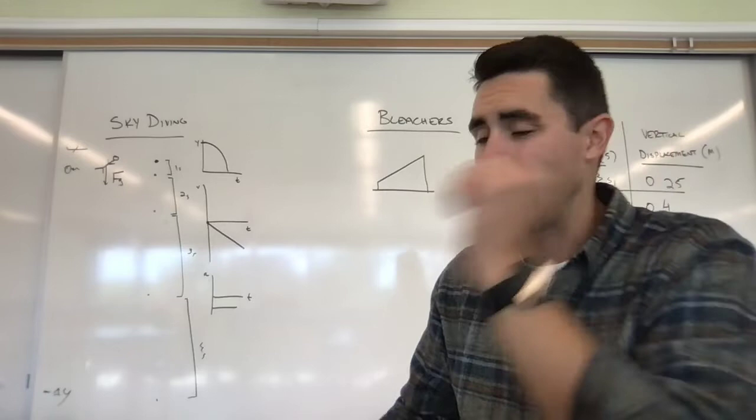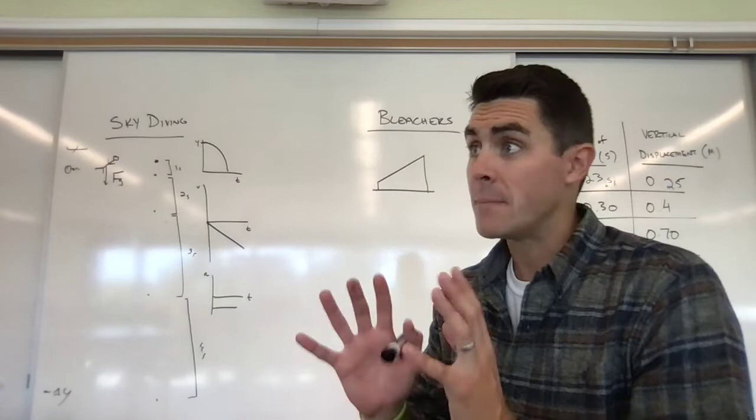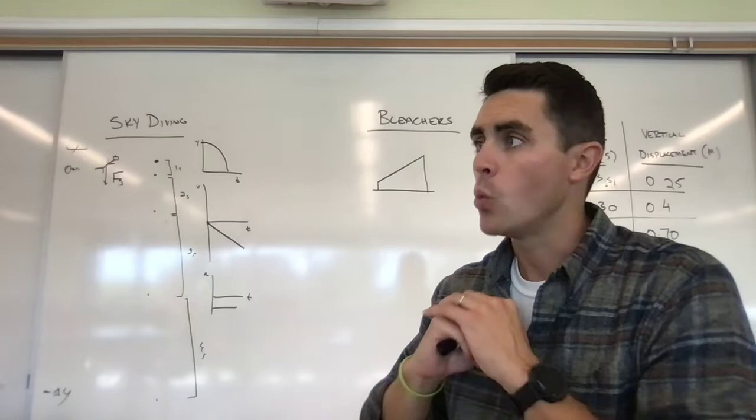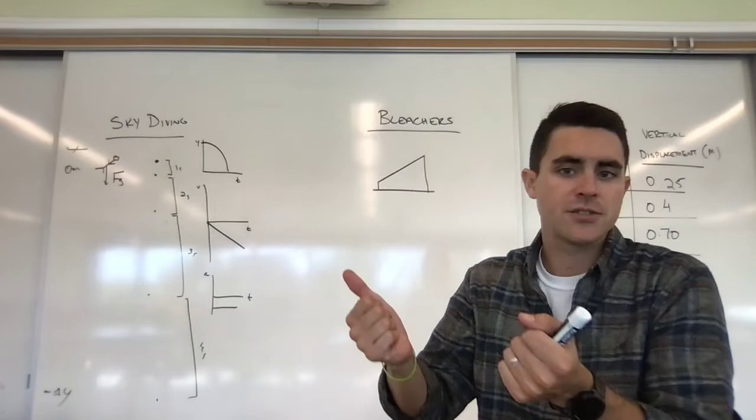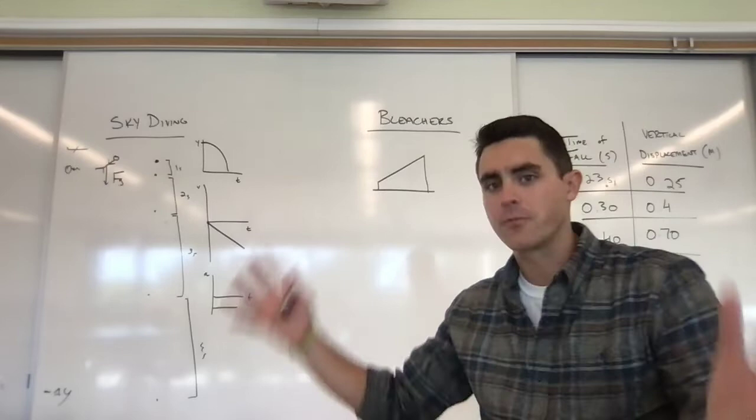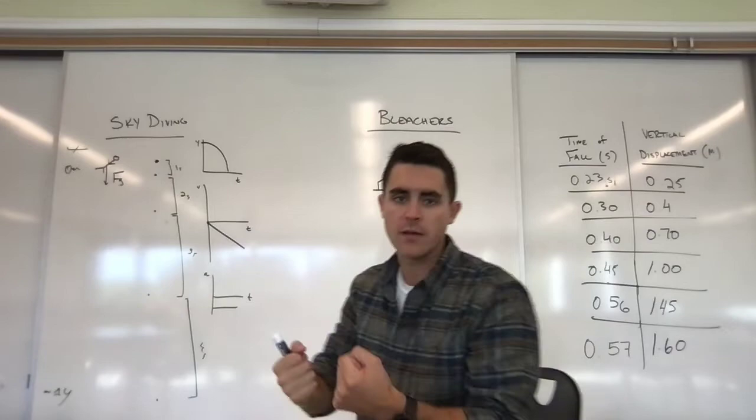So there are some objects that we have to consider air resistance for, but in the scope of this course, we ignore those. All of the objects we have in our course that we talk about, we can ignore air resistance with. They've got a pretty low surface area to mass ratio, meaning surface areas are small and masses are high, decreasing that ratio. So for the most part, we ignore air resistance. For objects that are free falling, objects that are dropping, our forces are going to only be the force of gravity pulling them down.